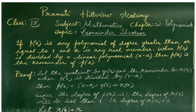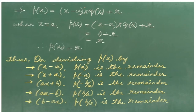So, let r of x be equal to r. This implies p of x is equal to x minus a into q of x plus r. Now, when x is equal to a, p of a would be equal to a minus a into q of a plus r, that is substituting a in place of x in the above equation, which is equal to — a minus a becomes 0. So, 0 into q of a becomes 0 plus r.